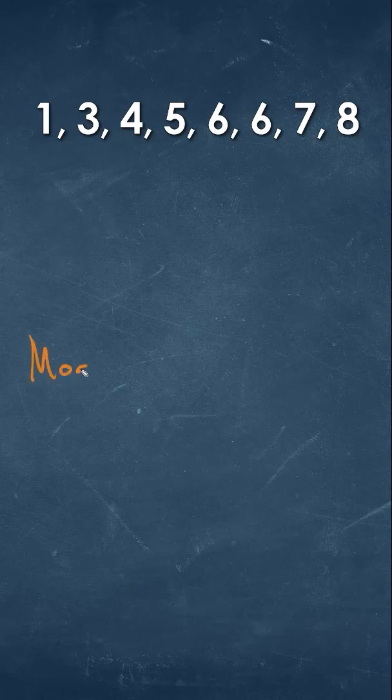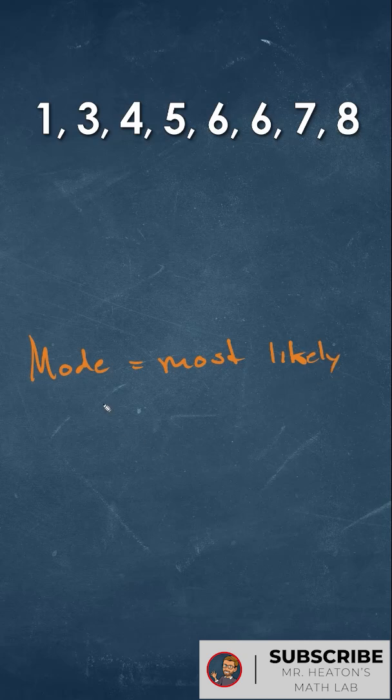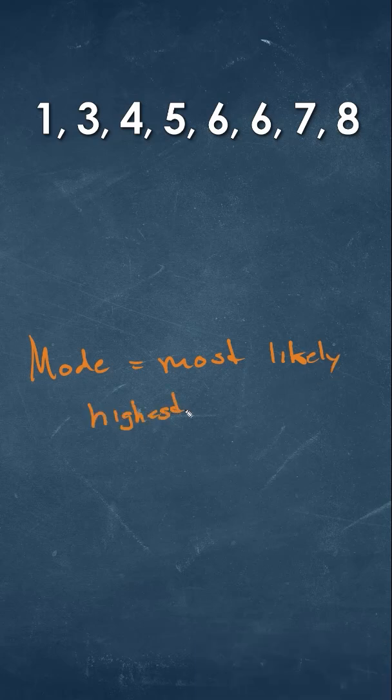The mode in the data set is really just looking for what happens the most, or what's going to be most likely. When we get into probability, it's the idea of what we're going to have as the highest probability of something happening.